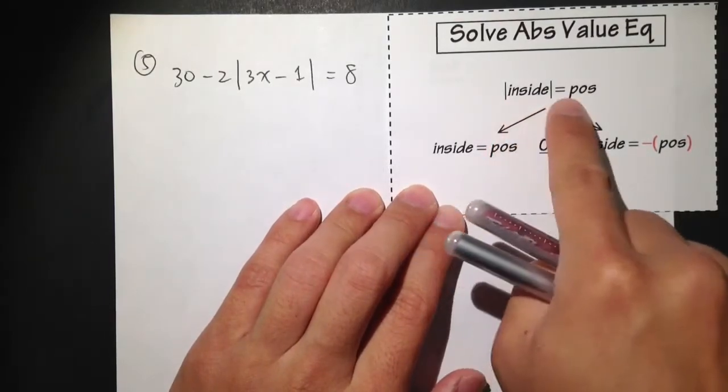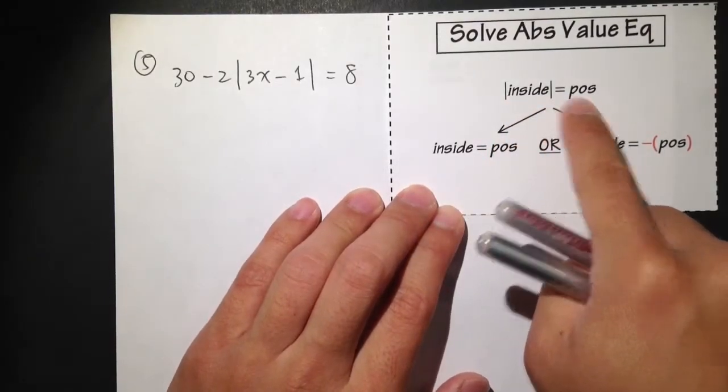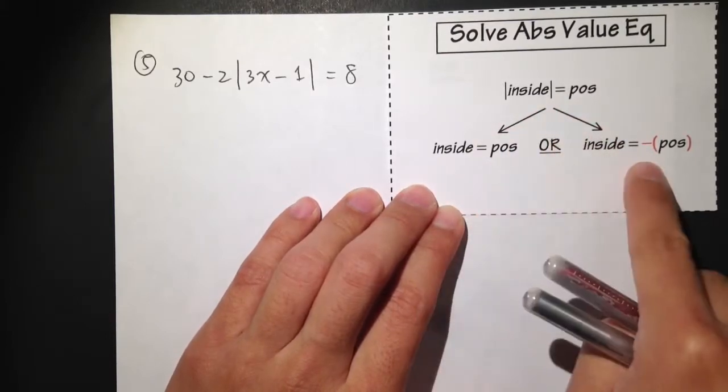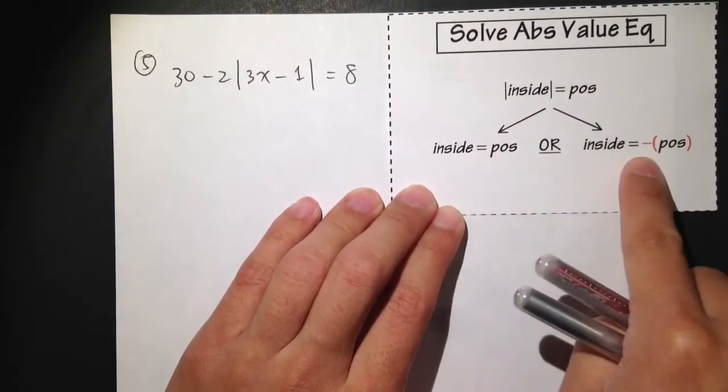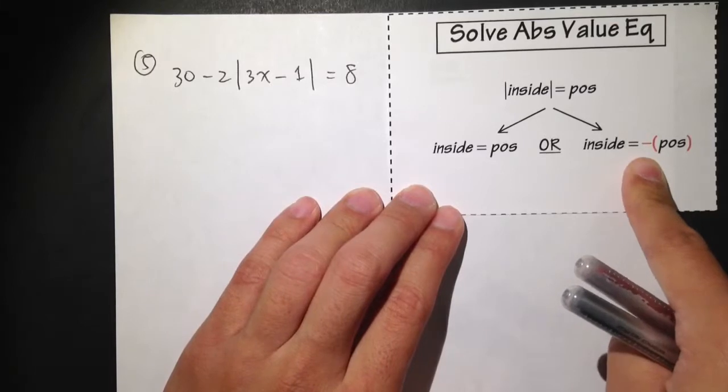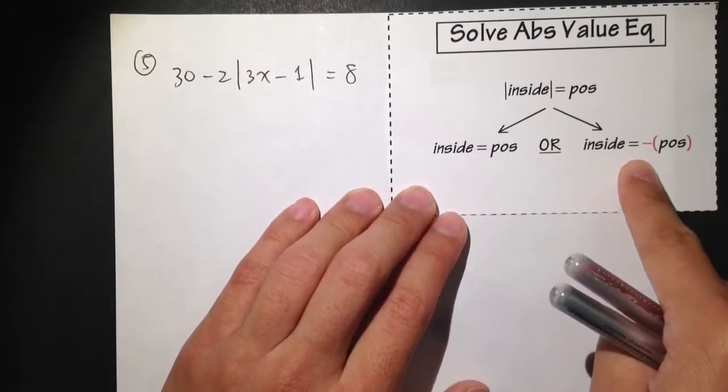If this is equal to a positive number, then we can split this into two different equations. But these two equations are the normal equations. They have no absolute value with it.